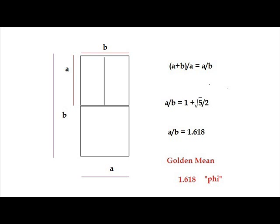Mathematically, he solves that using quadratic equations. He comes up with a unique solution to the quadratic equation. That unique solution is 1.618, and that is what is called the golden mean, or phi.